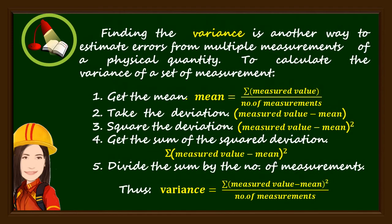Finding the variance is another way to estimate errors from multiple measurements of a physical quantity. To calculate the variance of a set of measurements: Number 1, get the mean. Number 2, take the deviation. Number 3, square the deviation. Number 4, get the sum of the squared deviation. And number 5, divide the sum by the number of measurements.